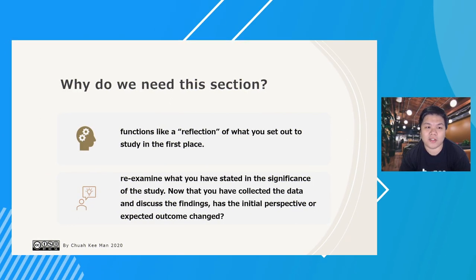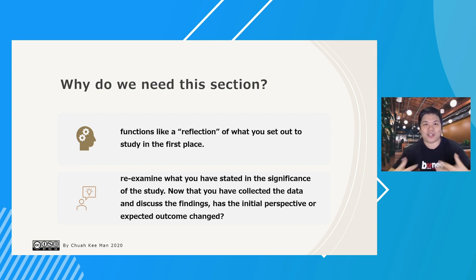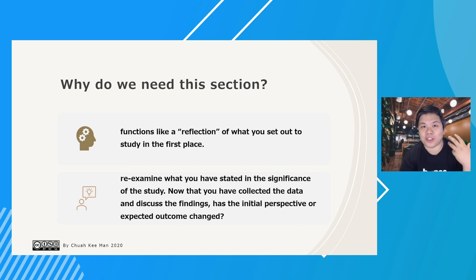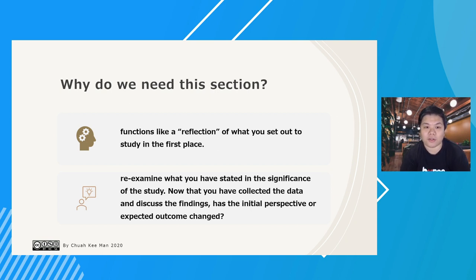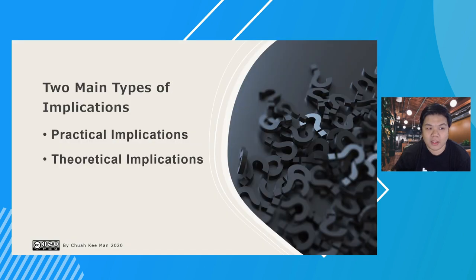Why do we need this section in the first place? Implication means you are doing a reflection of what you set out to study. It's like recalling what you promised to achieve in your objective, what you found, and whether that has changed over the course of your research. It's about re-examining everything and re-looking at your significance of the study — whether those significance points have been achieved or whether your perspective towards them has changed.